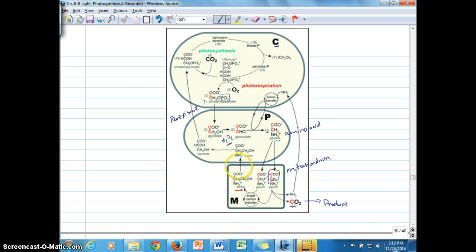So serine then can be transferred back to the peroxisome, converted into a glycerate, glycerate can then be transferred to chlorophyll once again,